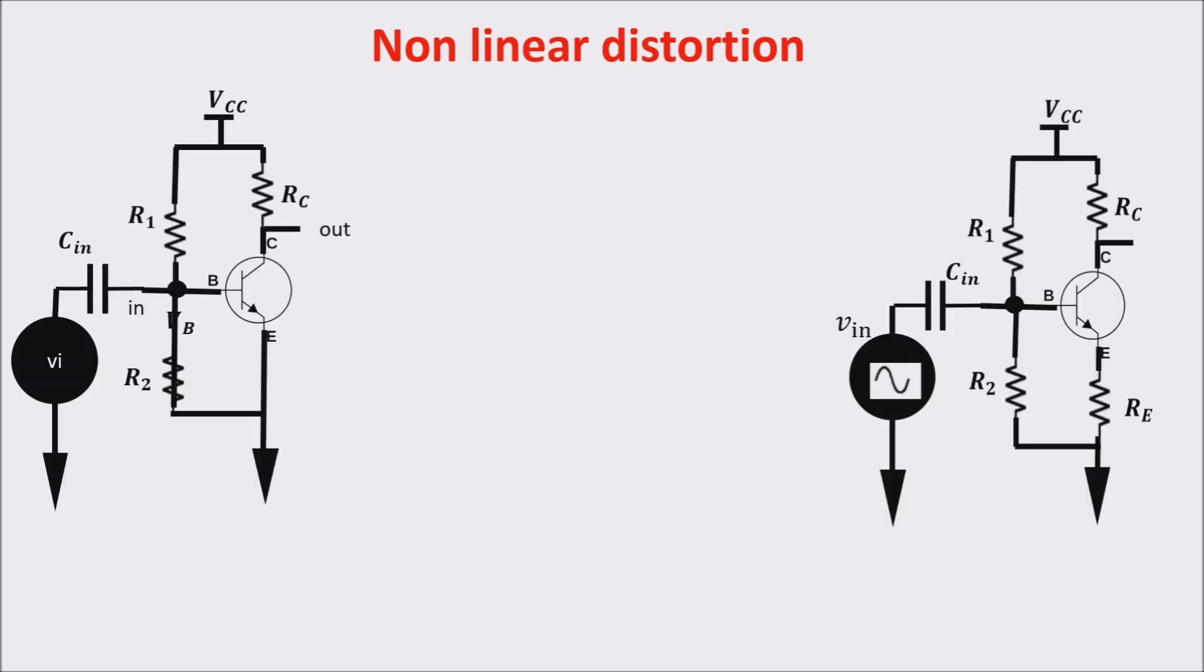An example of linearization through feedback is the emitter degeneration resistance which introduces a negative feedback. Without feedback the gain is minus gm rc so it depends on gm which is a non-linear element. We assume linearity just for very small signals so for Vin much less than the thermal voltage. But when Vin increases distortion starts. If we see the gain with the feedback so the closed loop gain we see that if Re is much larger than 1 over gm then the gain becomes this so it becomes independent of the non-linear factor gm.